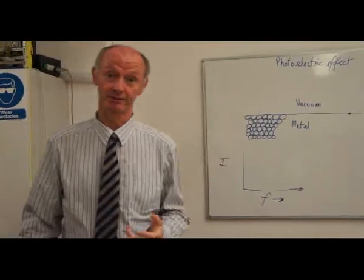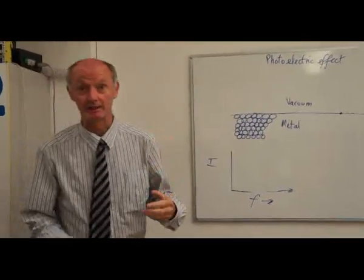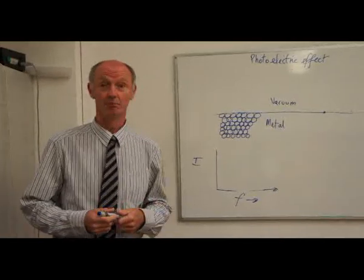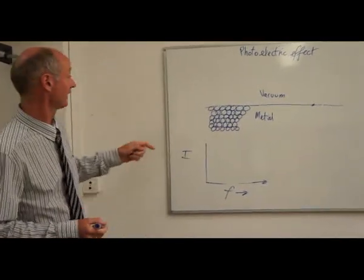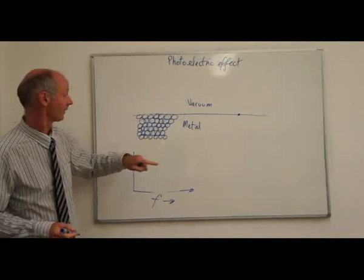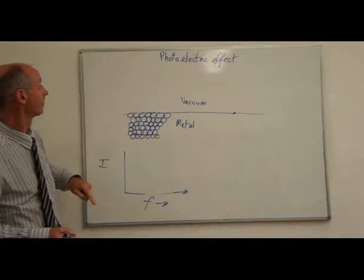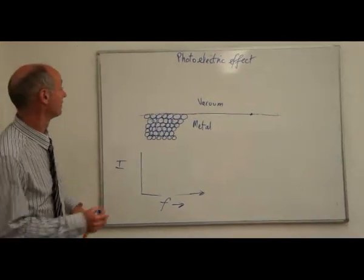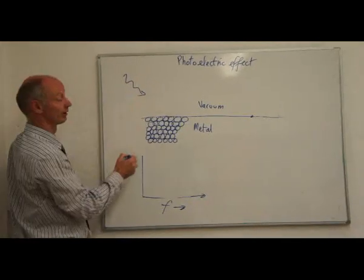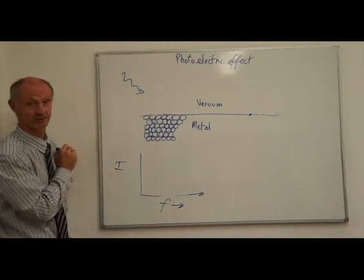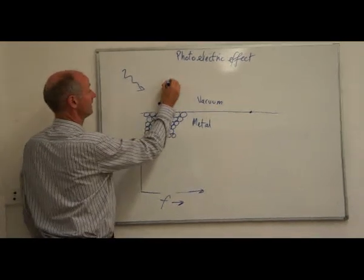Let's go back over the basic ideas and theory about the photoelectric effect. We have a metal surface with a vacuum, and we shine some light. Some photons arrive at the metal surface, and they cause electrons to be emitted.